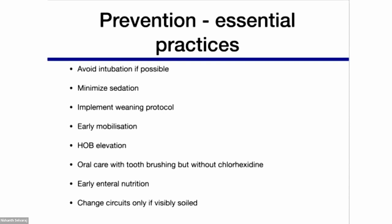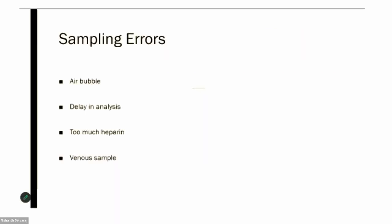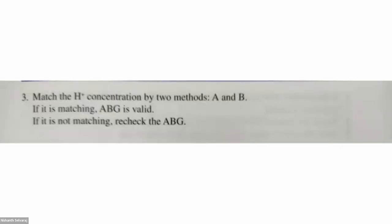When interpreting ABG in respiratory failure patients, keep in mind mixed disorders — for example, respiratory acidosis along with metabolic alkalosis. Sampling errors such as air bubbles, delayed analysis, too much heparin, and venous sampling should be kept in mind. Yesterday the final question of discussion was how to check the validity of ABG. The probable answer was shared in the delegates group by Dr. Sundaram from Chennai. That ends the recap. Moving on to the first talk of today.